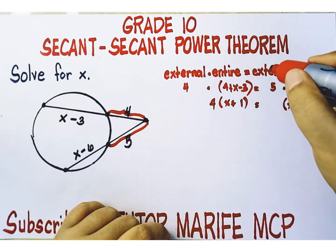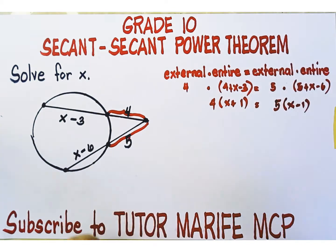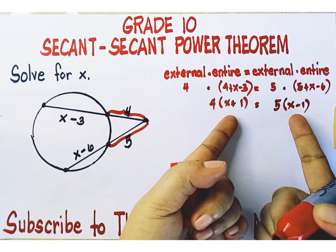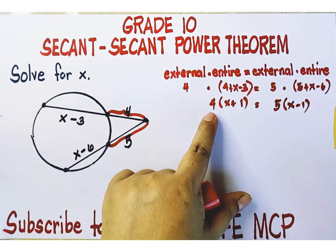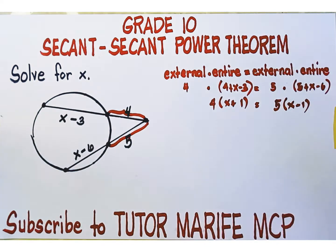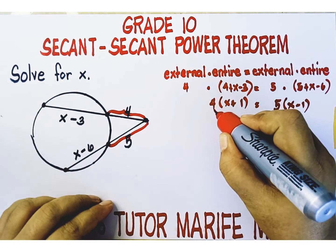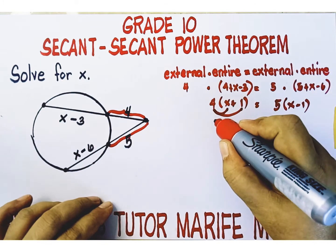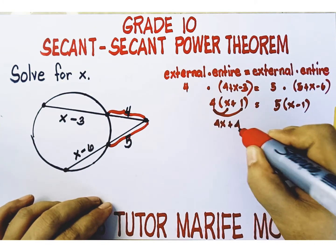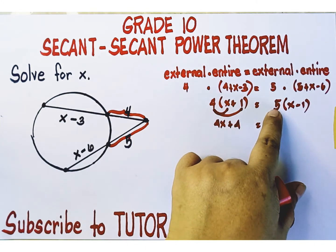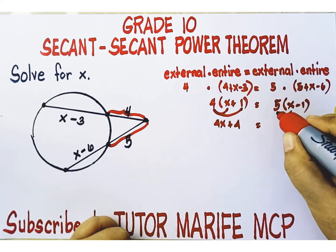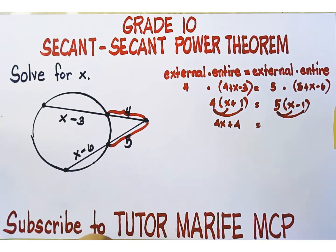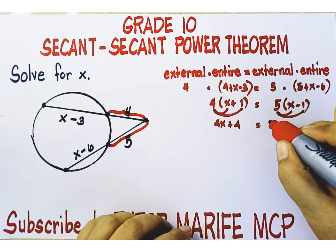Multiply x minus one by the external part, which is equal to five. Eliminate parentheses by the distributive property of multiplication. Distribute four into each term inside the parentheses: four times x equals four x, four times one equals four, so the left side becomes four x plus four. Distribute five: five times x equals five x, five times negative one equals negative five, so the right side becomes five x minus five.